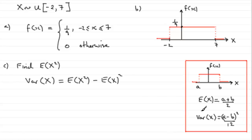So if we apply this then to the distribution that we've got here, for the variance of X, we've got 7 minus minus 2. Let's just write that as 7 minus minus 2. That is all squared and it's divided by 12.